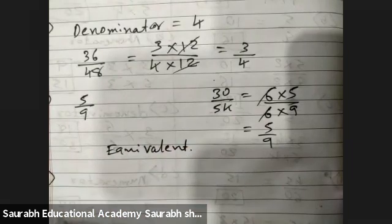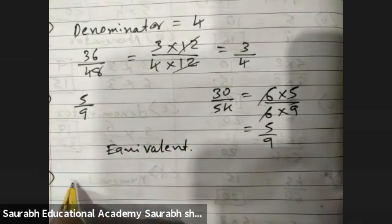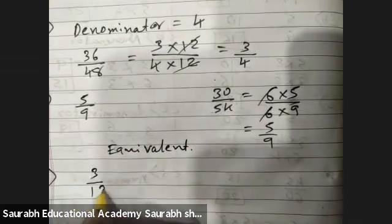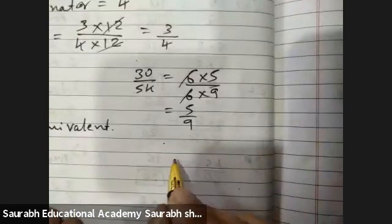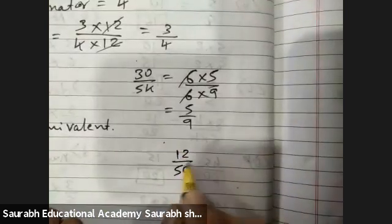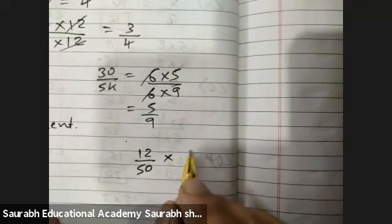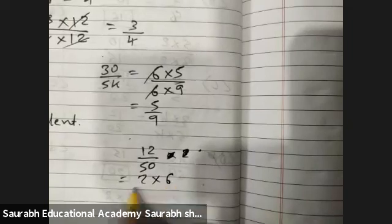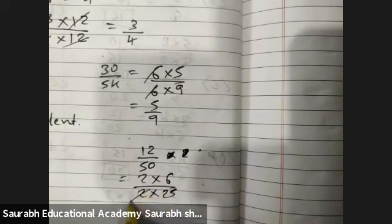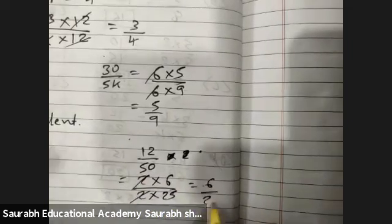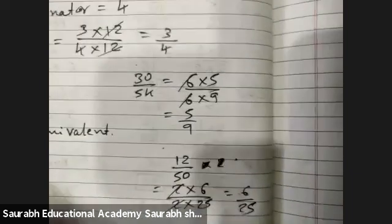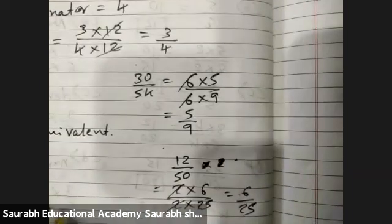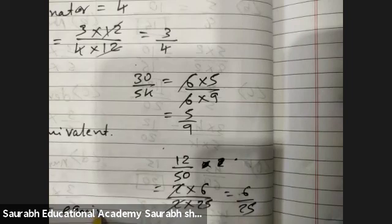Second, B. Three by ten and twelve upon fifty. Two sixes are twelve, two twenty-fives are fifty. Here it cannot be reduced further, so not equivalent.